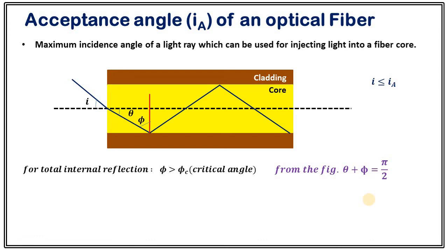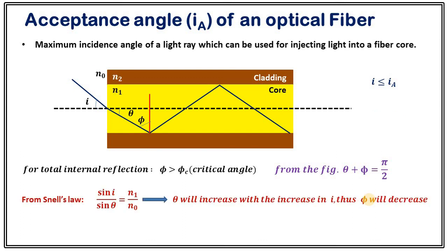Now assume that you have increased your angle of incidence above the acceptance angle. In that case, as i increases, from Snell's law theta will increase, and as theta increases, phi will decrease. So when the angle of incidence is higher than the acceptance angle, phi is less than the critical angle, and as a result, light won't be totally internally reflected — it will just pass through the cladding and we will lose that light.